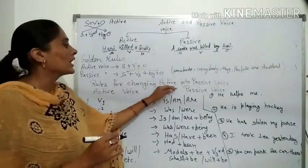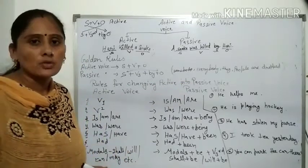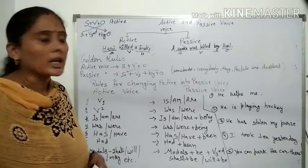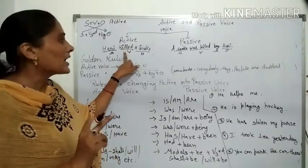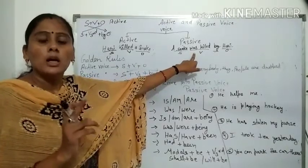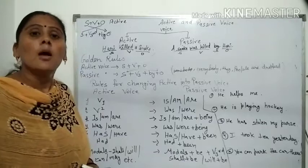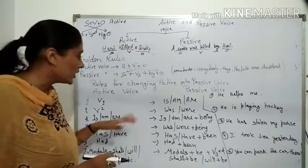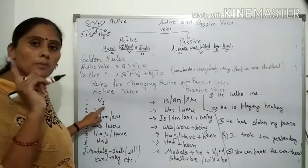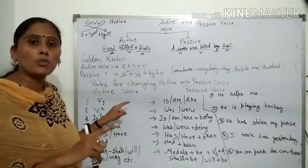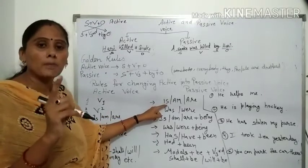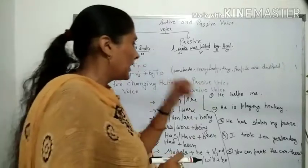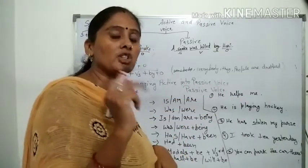Rules for changing active voice into passive voice — कुछ rules हैं active voice से passive voice में बदलने के लिए। Tenses का यह chart है — कैसे tenses change होते हैं। जैसे past indefinite tense को 'was/were + verb की third form' में change किया जाता है। और यहाँ present indefinite tense में verb की first form को 'is/am/are + verb की third form' में change किया जाता है। जैसे 'he helps me' — helps verb की first form है, यह present indefinite tense है।